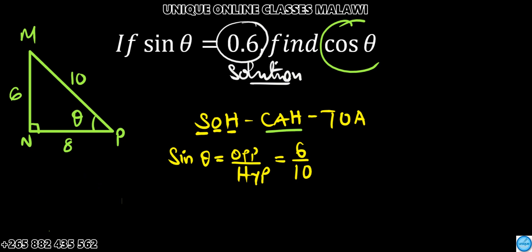Cosine is adjacent over hypotenuse. So what we have here, cos θ is equal to adjacent. Adjacent of this angle, that's 8, so we're going to put it there, 8.